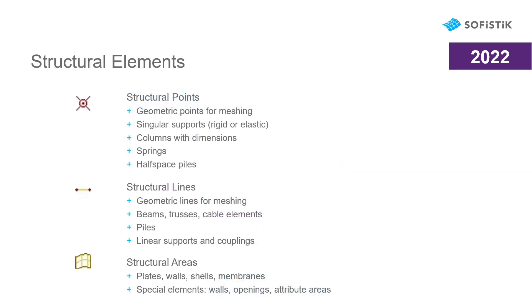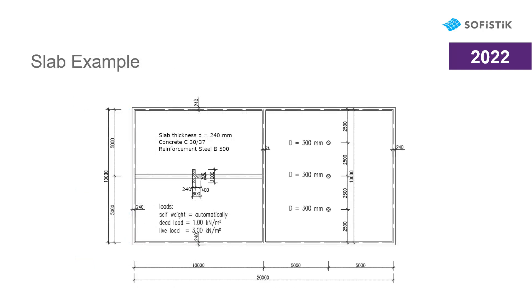You can model your structure geometrically by using structural elements. Structural elements represent the analytical model of your structure based on its points, edges and surfaces. Here is a short overview of building elements next to the corresponding structural elements. The finite element mesh will then be automatically generated based on these structural elements. I will show you how to model and calculate this slab in this online training.